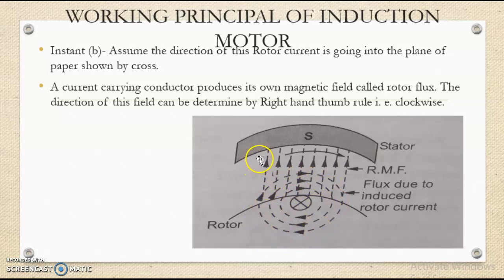On the left-hand side, both fields are in the same direction. These two fields add up to produce a high flux density area.